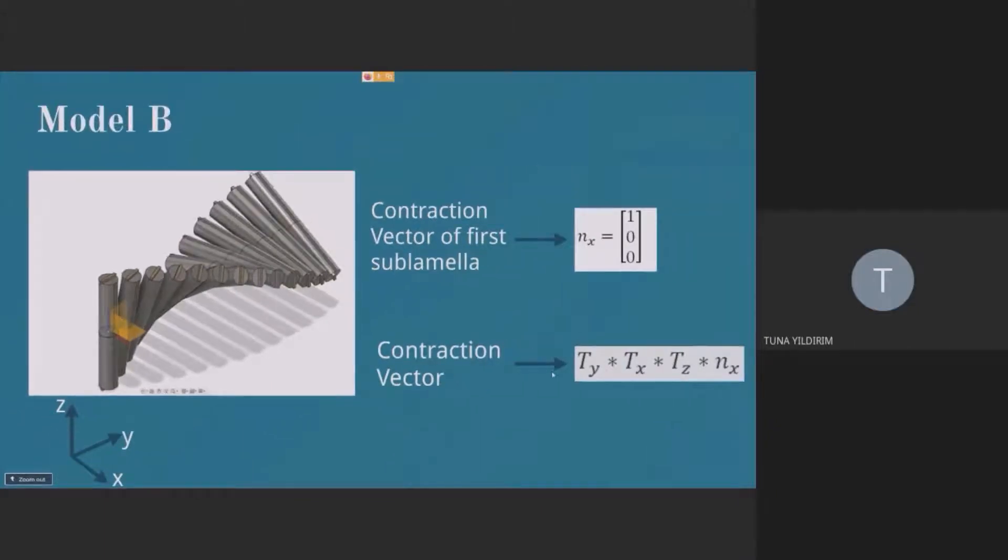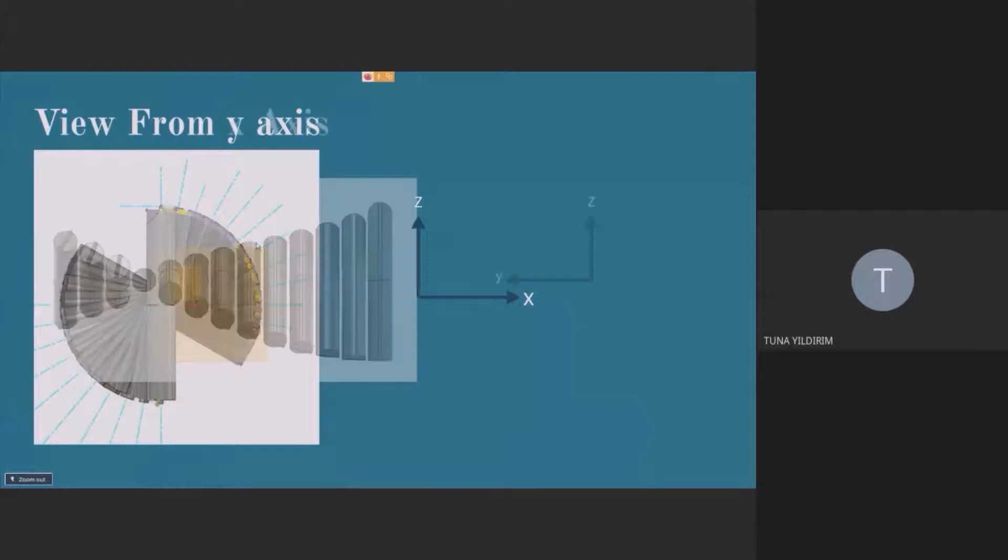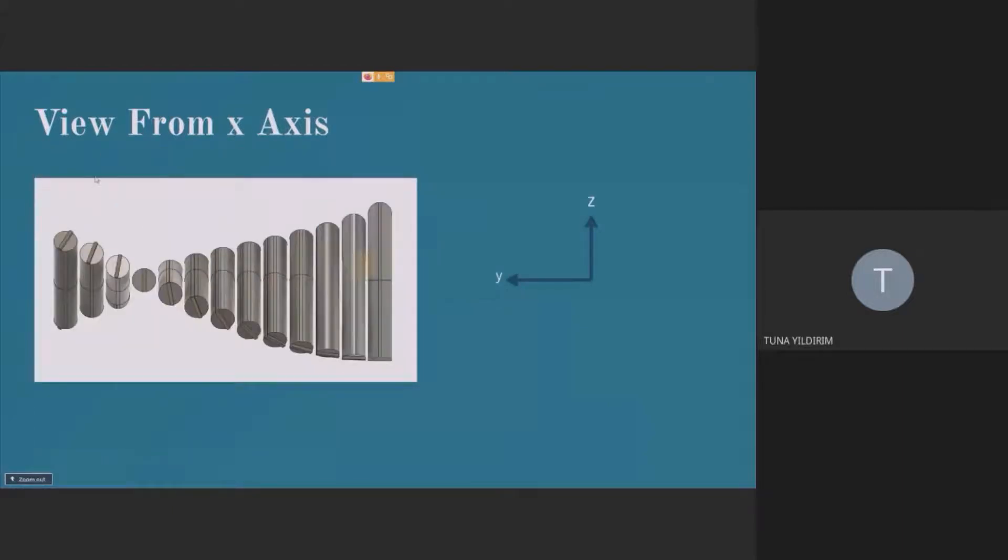And this is my contraction vector calculation here. And this is a view from y-axis. You can see the orientation again and the projections, which I will give you more details about. And for model B, all of the sublamellas are different. And we will see that in results as well.